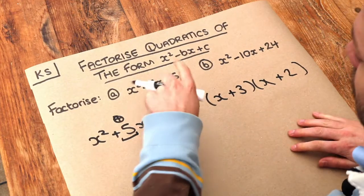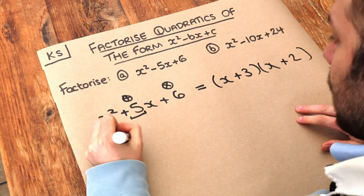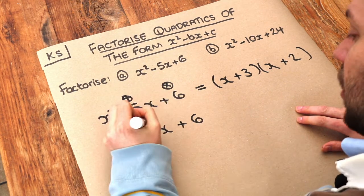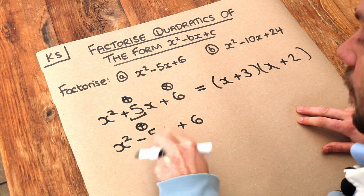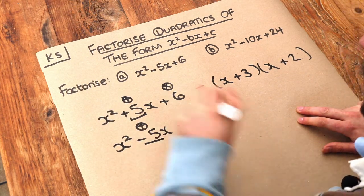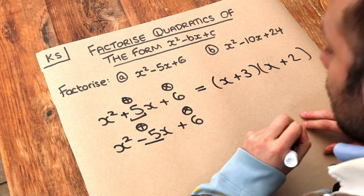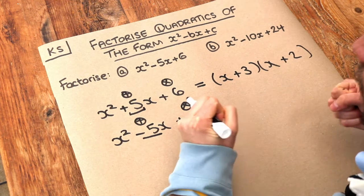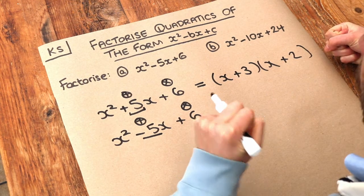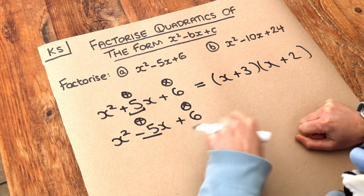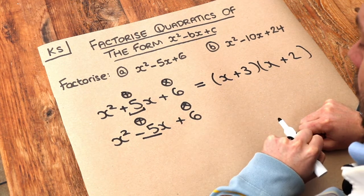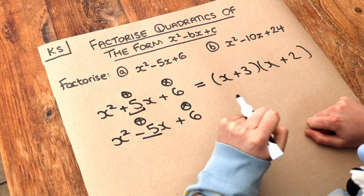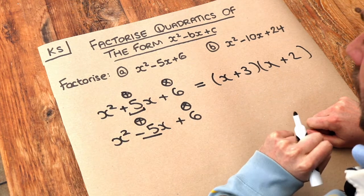Now these ones are a bit more difficult, because we have to think about positive and negative numbers. So we have x squared minus 5x plus 6. Again, we need two numbers which add to give negative 5, because we've got minus 5 in front of the x, and multiply to give 6. Now if two numbers multiply to give positive 6, either both the numbers are positive, or both numbers are negative. The numbers can't both be positive, because they wouldn't add to give a negative number. So it must be that both the numbers we're looking for are negative.